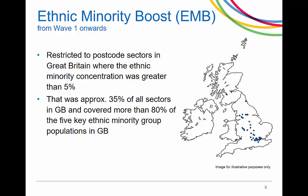To manage the costs, sampling was restricted to areas in Great Britain where the ethnic minority concentration was greater than 5%. That was approximately 35% of all areas in Great Britain and covered more than 80% of the five key ethnic group populations in Great Britain.